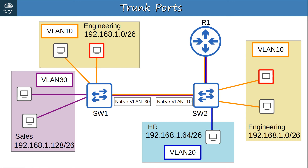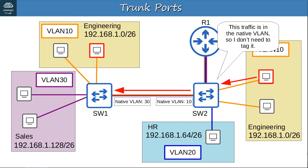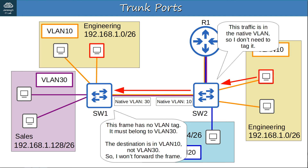Now let's look at a native VLAN mismatch. On SW2's interface the native VLAN is configured as VLAN10, but on SW1's interface it is configured as VLAN30. When SW1 receives the untagged frame, it thinks: this frame has no VLAN tag, therefore it must belong to VLAN30 — but the destination is in VLAN10, not VLAN30, so it won't forward the frame. This shows why the native VLAN configuration must match between switches.